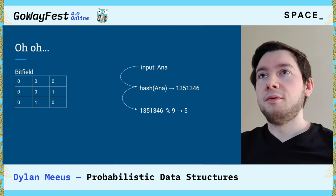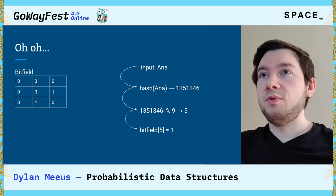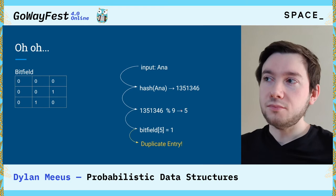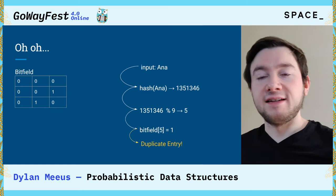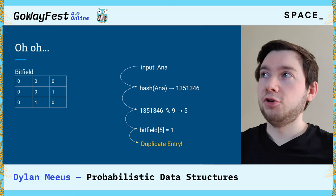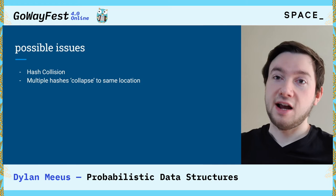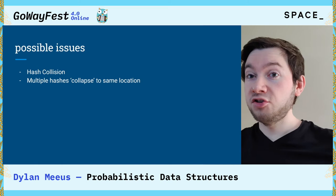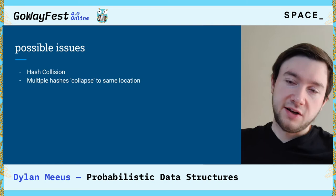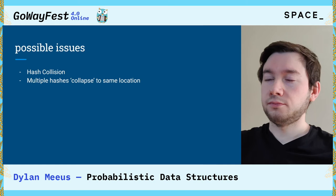Now what happens is we have a hash collision — a collision in the bit field. We have a duplicate entry, and this is where the probabilistic nature of a bloom filter comes in. It is possible that multiple elements correspond to the same location in your bit field. One cause is a hash collision where two usernames create the same hash. Another is that different hashes still equate to the same location in the bit field, depending on the size of your bit field.